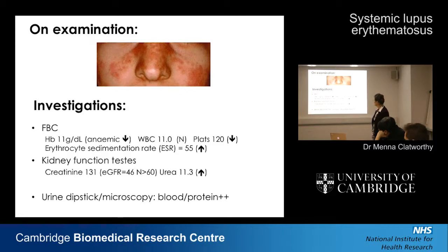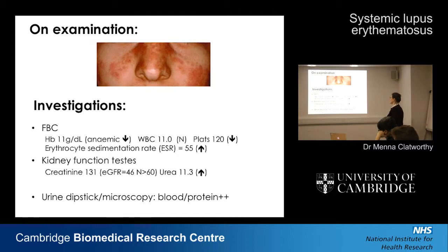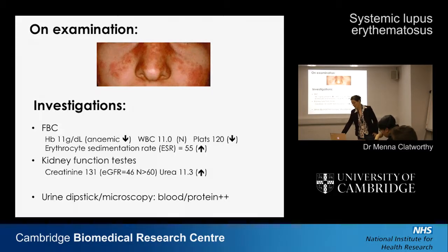Her platelets, which are responsible for helping the blood clot, were on the lower side. More worrying was when we looked at her kidney function tests. We look at something called creatinine, a waste product removed by the kidneys — if the kidneys aren't working well, creatinine goes up. Her level was higher than expected for someone her age, suggesting kidney function was impaired. When we dipped the urine, we found both blood and protein, which is highly significant in a young female and suggests inflammation.